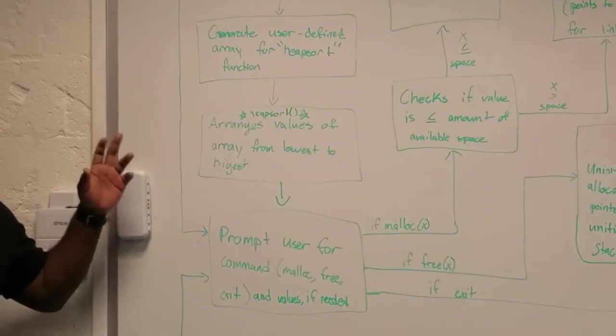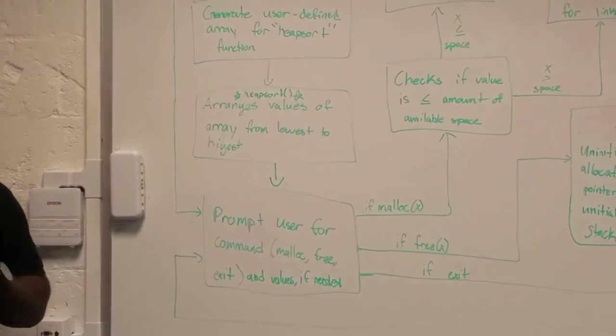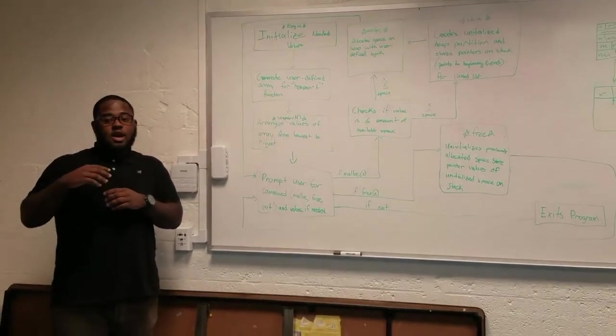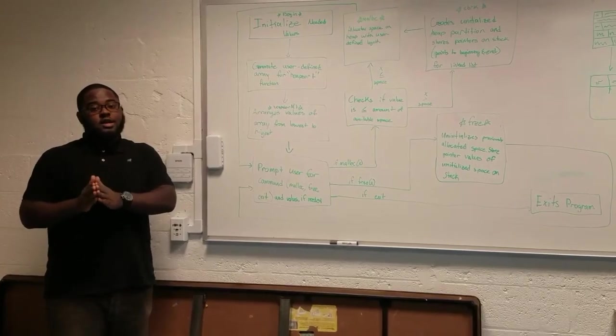Then we send the values via the stack to the heap sort function, which is another loop that would read off the stack and arrange it in order from left to right of lowest to highest value.